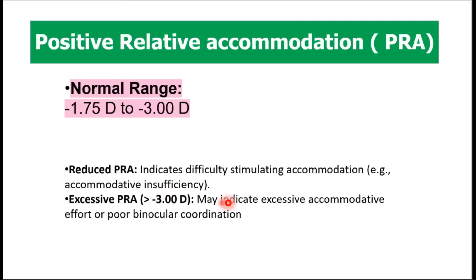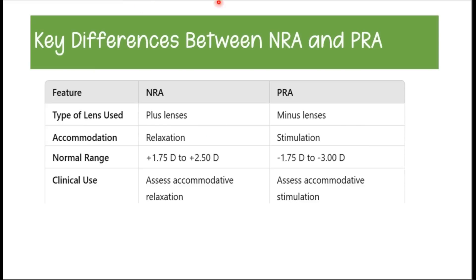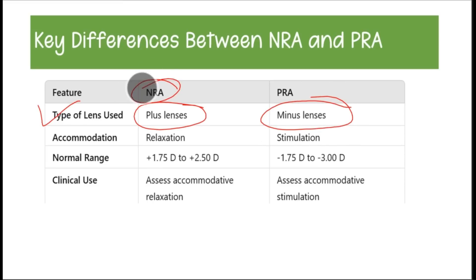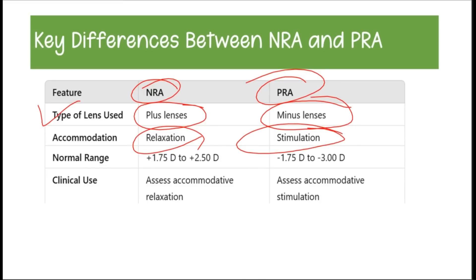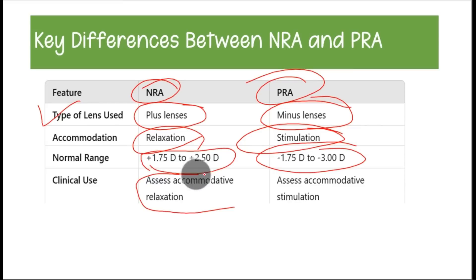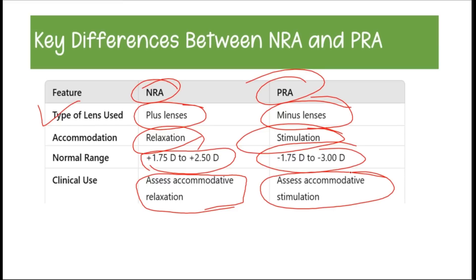An excessive PRA means the patient already has excessive accommodative effort at baseline. The key differences: in NRA you use plus lenses to relax accommodation, while in PRA you use minus lenses to stimulate accommodation. NRA normal range is plus 1.75 to plus 2.5 diopters; PRA normal range is minus 1.75 to minus 3 diopters. NRA assesses the amount of accommodative relaxation achievable, while PRA assesses the maximum accommodative stimulation the patient can tolerate.